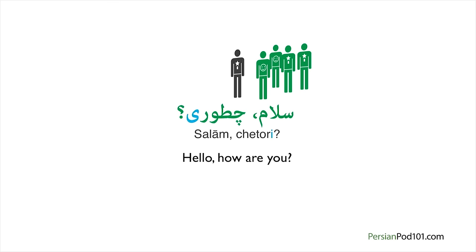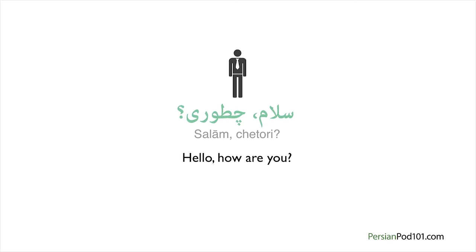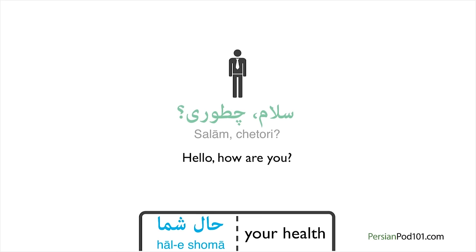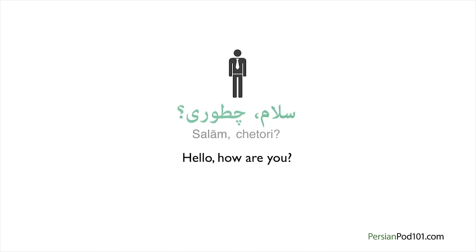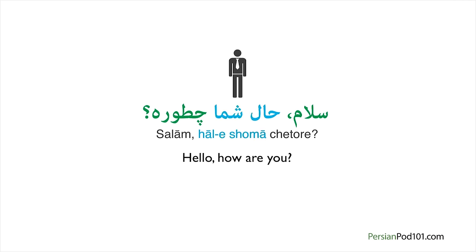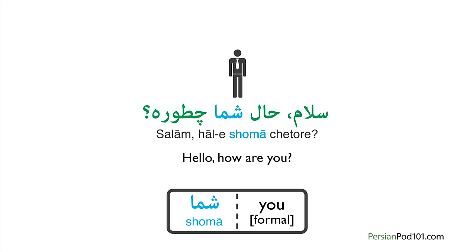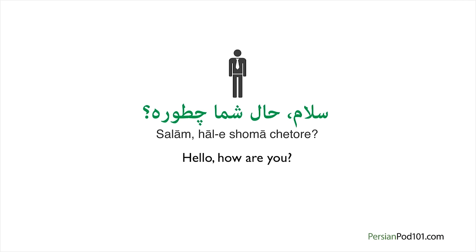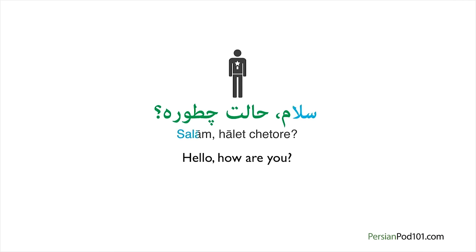The 'i' in 'chetori' makes this sentence second person. The formal way becomes slightly longer — add 'hale shoma,' which means 'your health': Salam, hale shoma chetore? 'Hale shoma chetore' literally means 'how is your health.' We use the word 'shoma,' meaning 'you,' instead of saying 'chetori' to make it more formal. If you remember the first lesson, adding 'et' to a word made it informal. So if you add 'et' to 'hal' instead of 'e shoma,' you make the whole sentence informal: Salam, halet chetore?